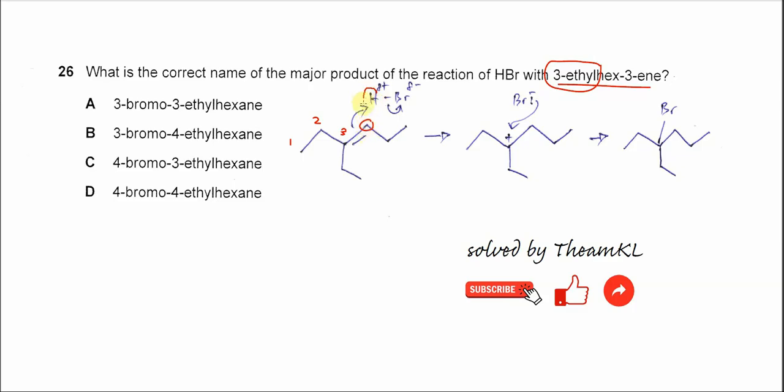If this hydrogen adds to this carbon, then it will form this carbocation, means the C-H bond forms, so this is the intermediate or the carbocation that is produced.